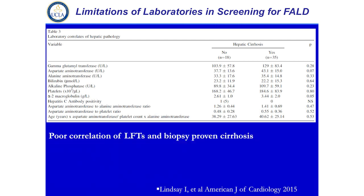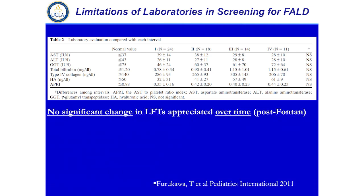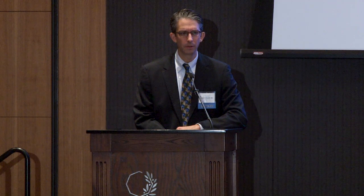This is a nice multicenter study of about 60 adult patients who were Fontan long-term survivors, and what this highlights quite well is that none of these labs correlate very well with the risk of biopsy-proven cirrhosis. When they looked at patients who had biopsies within six months of laboratories, there was not a great correlation in terms of what the labs will tell us. This paper from Japan, looking again at a relatively small number of patients, divided over four time points and looked longitudinally at liver function tests, and you don't see significant changes in the labs that correlate with the histology. So there are certainly limitations to our labs and to how we can use them to screen our Fontan patients.